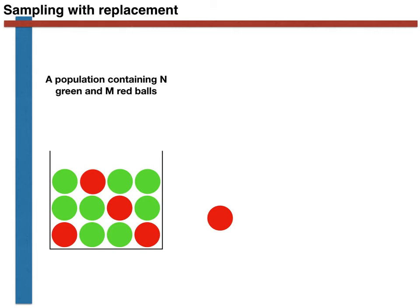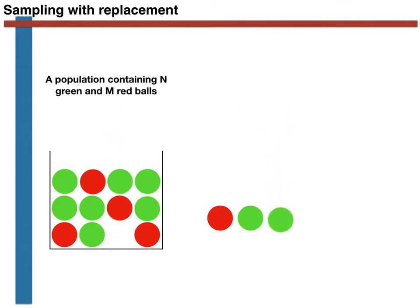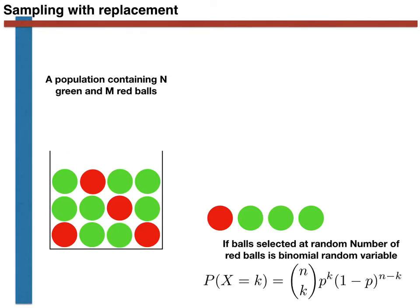This ensures that when we come to select the second ball, the probability of selecting the red one is again one third, and the probability of selecting the green ball is again two thirds. As long as we replace the balls that were selected from the cup after their selection, the probabilities of selecting red and green balls are the same in all trials. Consequently, if we continue selecting and replacing balls, we find that the number of red balls selected can be modelled using a binomial random variable, with a p-parameter of one third in this case.